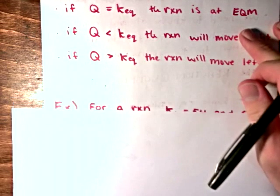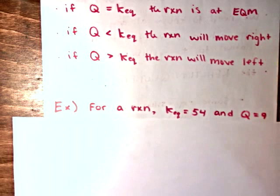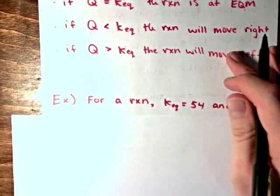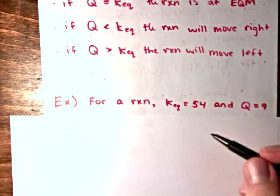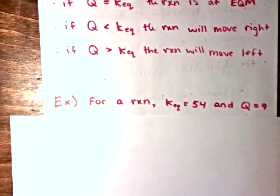So, let's say we were given a question for a specific chemical reaction. It doesn't matter what it is. We were told that the equilibrium constant is equal to 54, and we were also told that through experimentation, the reaction quotient was determined to be 9.